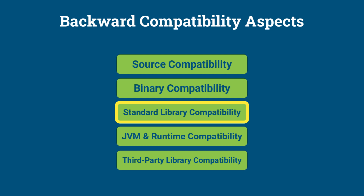Standard library compatibility. Java 11 maintains compatibility with the Java 8 standard library, ensuring that applications using Java 8 standard library classes and methods continue to work on Java 11. For example, code that uses Java 8 standard library classes like java.util.ArrayList or java.time.LocalDateTime will work the same way on Java 11 without any changes.